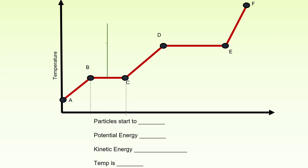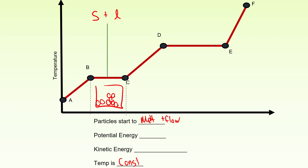In section BC, the particles are starting to melt and flow. Two phases are present — solid and liquid. In a particle diagram, you'll have some solid locked in place not flowing, but it's starting to melt and you get some liquid present. You can see the graph is flat on the y-axis, meaning temperature is constant. We keep adding heat but the temperature isn't changing — that's because the potential energy is increasing. All that added energy is being converted to potential energy to melt the solid. Since temperature is constant, kinetic energy is also constant.